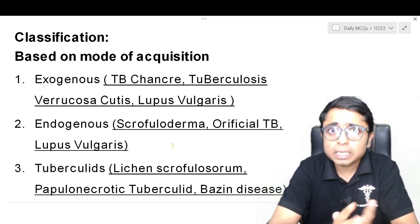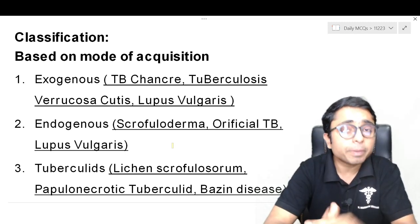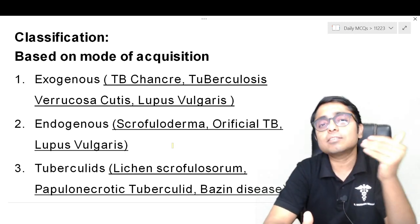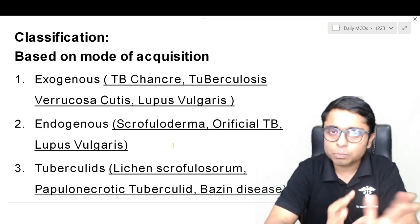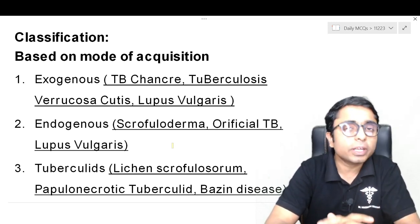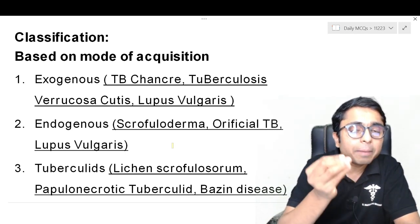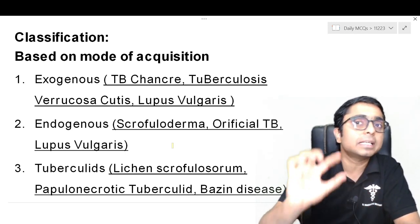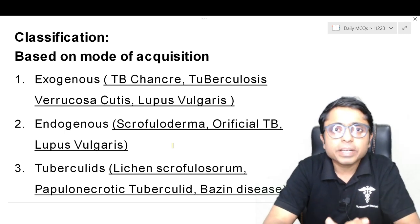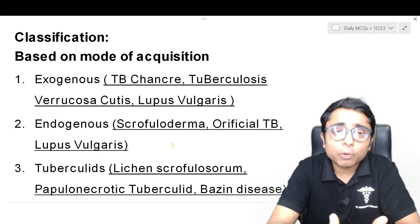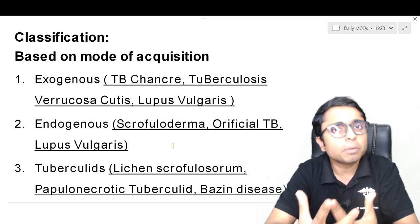Finally, lupus vulgaris is peculiar because it can be both exogenous and endogenous. In the endogenous form, lupus vulgaris — the most common type of cutaneous tuberculosis — occurs due to MTB bacillus spreading through the bloodstream. For tuberculids, there are three types: lichen scrofulosorum, papulonecrotic tuberculid, and erythema induratum of Bazin. All of these are hypersensitivity reactions to MTB bacillus.